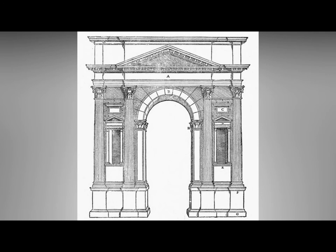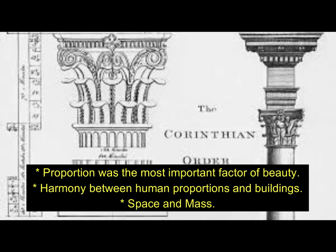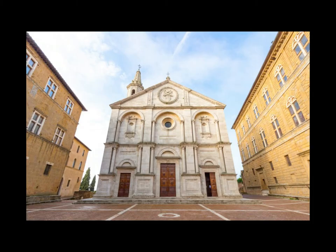During this era, there was also a revival of ancient Roman forms, including the column and round arc, the tunnel vault, and the dome. The basic design element was the classical order, and knowledge of classical architecture came from the ruins of ancient buildings. As in the classical period, proportion was the most important factor of beauty. Renaissance architects found a harmony between human proportions and buildings. This concern for proportion resulted in clear, easily comprehended space and mass, which separates the Renaissance style from the more complex Gothic style.